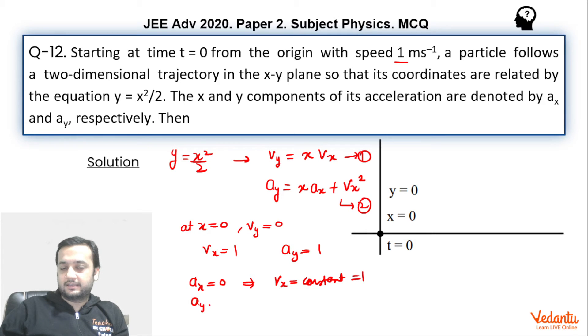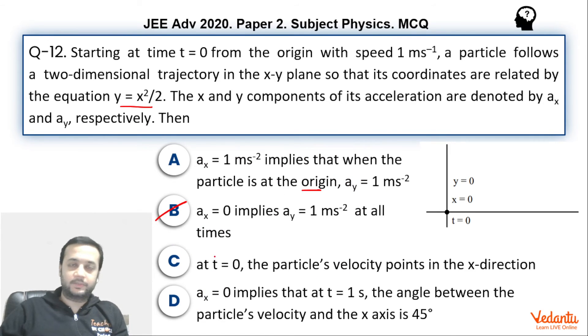Hence, ax equals to 0 implies ay equals to 1. So option B was right in my opinion.